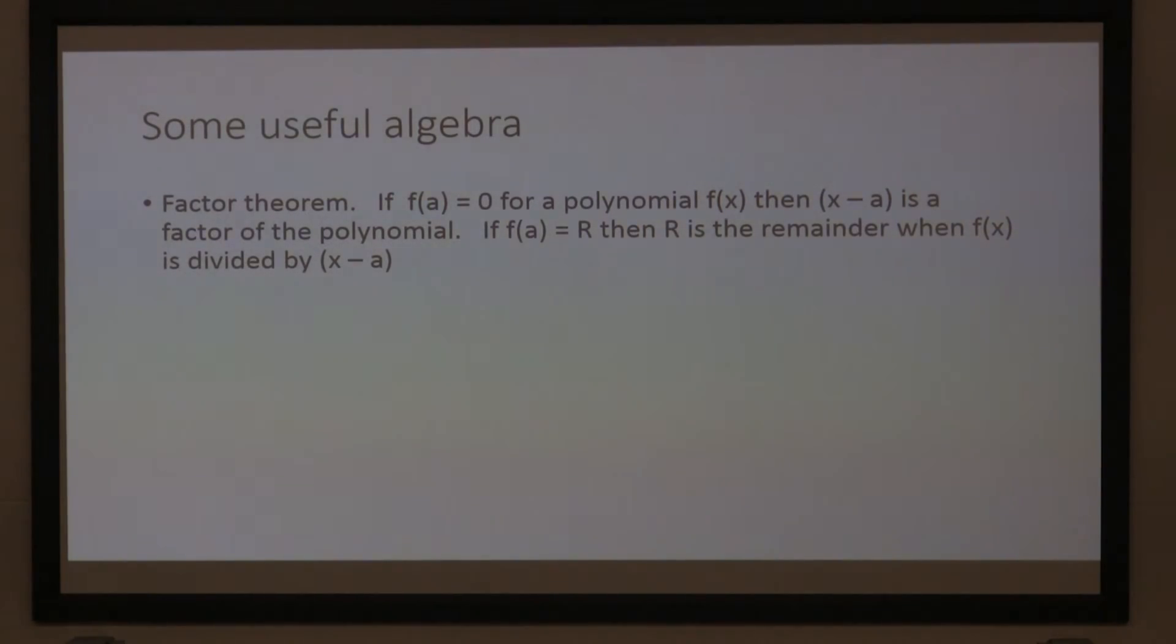If you don't get zero, that number you do get is the remainder when you divide that polynomial by x minus that number. Okay? So, that is useful algebra. So, this is something that I would think would be assumed by all people studying Olympiads. You would know this. But, it's not done thoroughly in school.